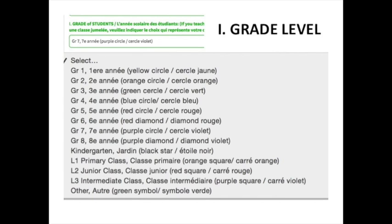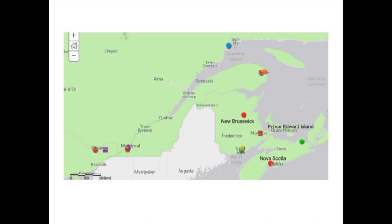Unfortunately, because of the way the map search tool works, we're only able to list straight grades. So if you teach a split grade class, we apologize and ask you to choose the grade that best represents your class. The grade level of each artifact will then appear as a different colour and symbol on the map for easy visual identification.